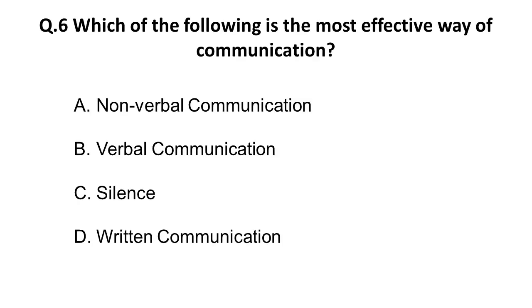Question 6: Which of the following is the most effective way of communication? Options: A) non-verbal communication, B) verbal communication, C) silence, D) written communication. The correct answer is B: verbal communication. This is a factual question — the most effective way of communication is verbal communication.